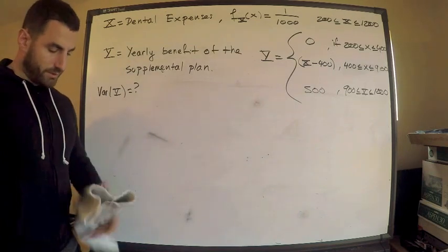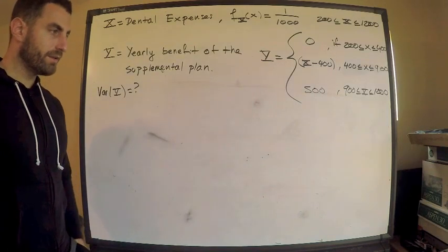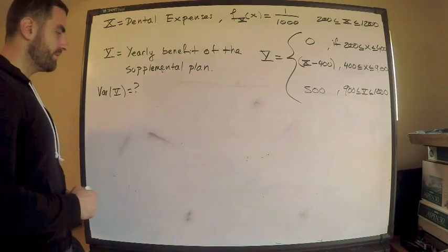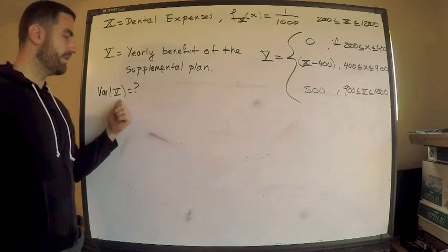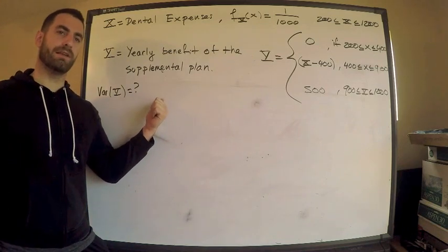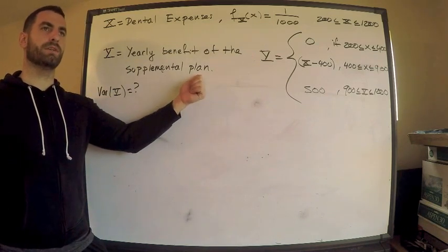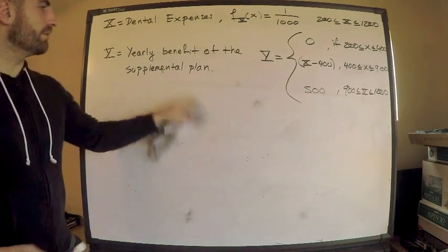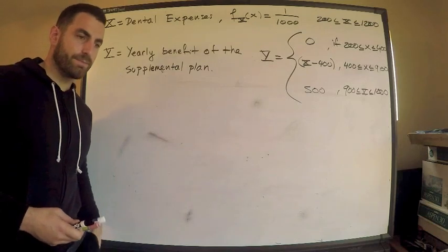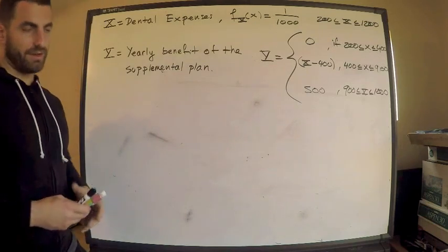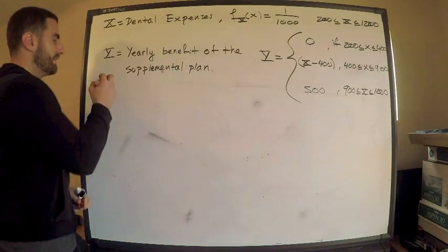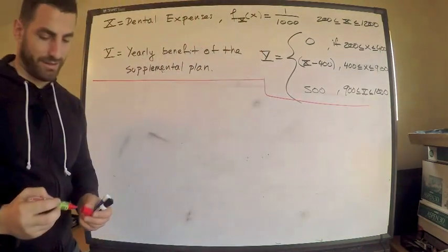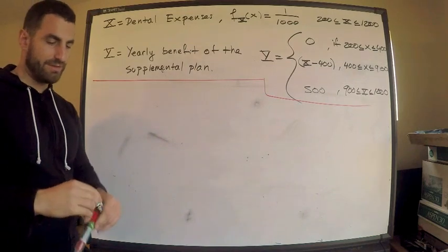We're looking to compute the variance of Y of the supplementary benefit. I'm just going to use the definition. So definition of variance is the second moment minus the first moment squared. So let's compute the first moment first. All right, let me give myself a little more room. Now, hopefully you're familiar with this enough that you can actually just bust out these computations quite quickly. Uniform distribution is one of the easier ones to integrate.